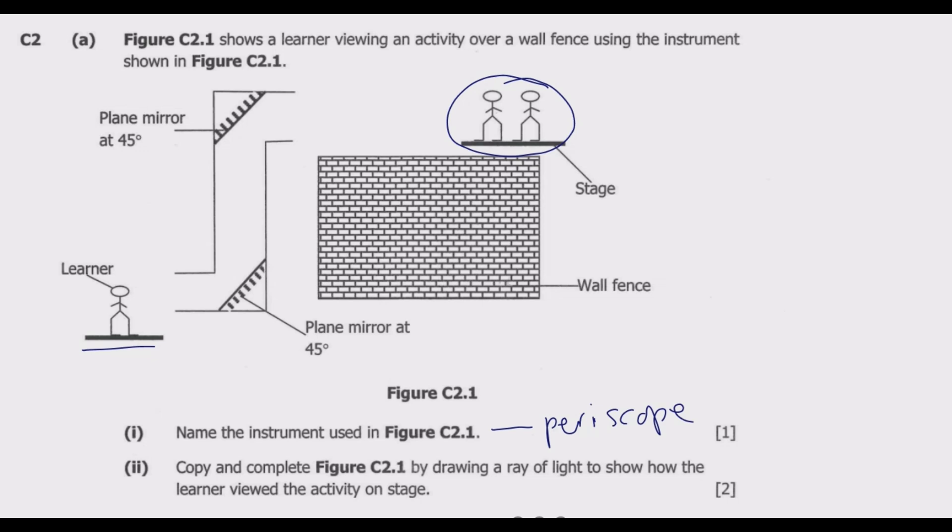Number 2: copy and complete figure C2.1 by drawing a ray of light to show how the learner viewed the activity on the stage. What is key here is to ensure that the ray of light is coming from the image going to the viewer.